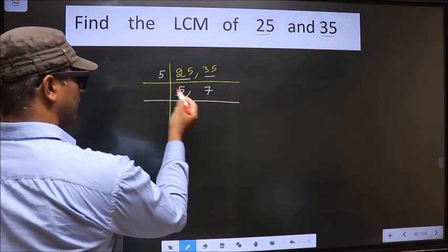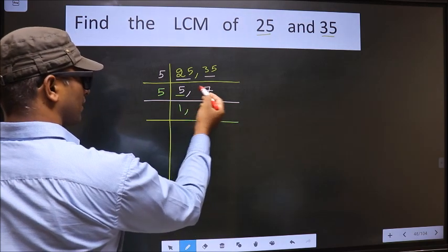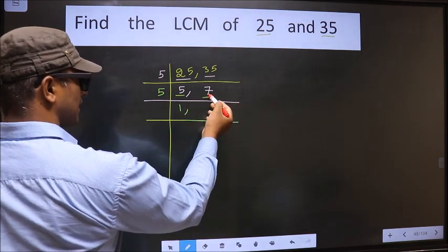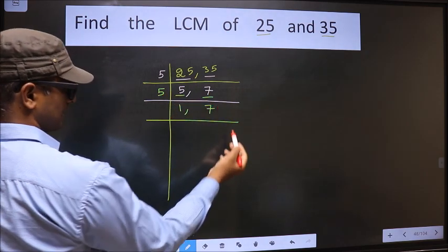Now here we have 5. 5 is a prime number. So 5 divides 5. The other number is 7. 7 is not divisible by 5, so we write down 7 as it is.